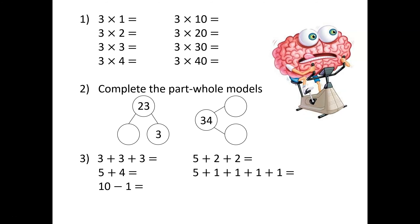How did you get on? Let's have a look at question one. Three multiplied by one is three, so three multiplied by ten is thirty. Three multiplied by two is six, so three multiplied by twenty is sixty. Question one's focus is to identify the pattern of multiplying by ones and multiplying by multiples of ten.